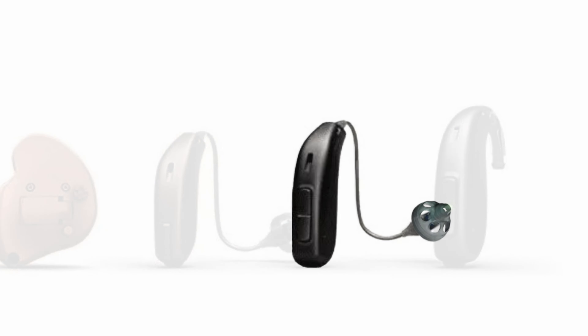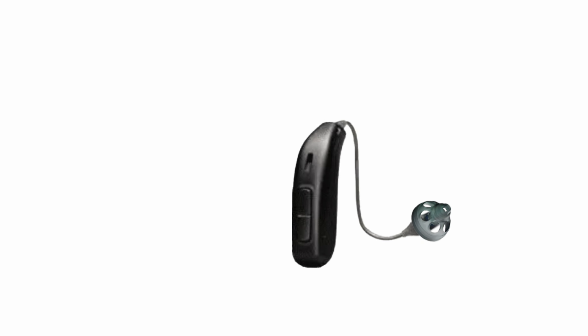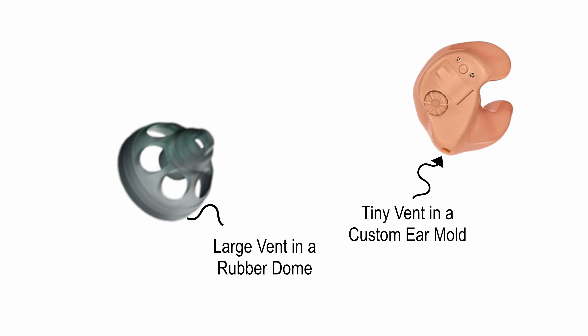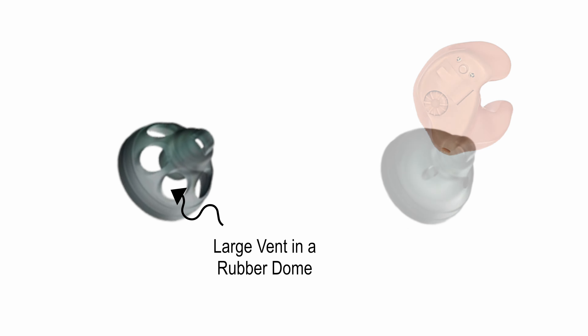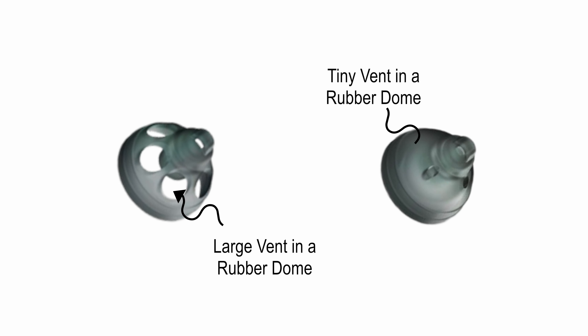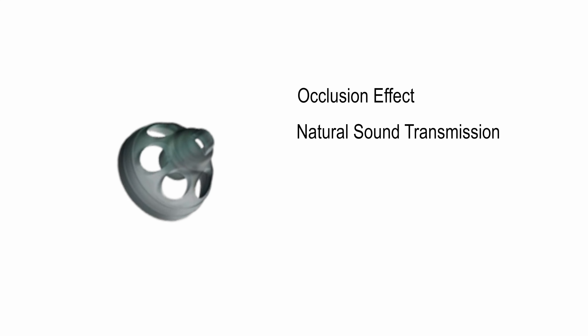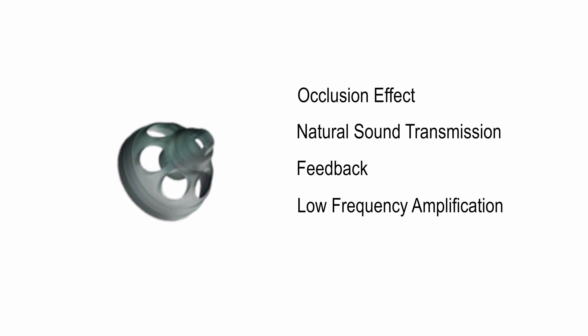And when it comes to fitting, the ear mold vent size is key to ensuring the best possible hearing amplification with the least amount of hearing aid auditory complaints. A hearing aid vent is basically an opening in the hearing aid dome or ear mold. The vent can be very large or extremely small or even absent. However, choosing the right vent size will impact four things: occlusion effect, natural sound transmission, feedback, and low frequency amplification.